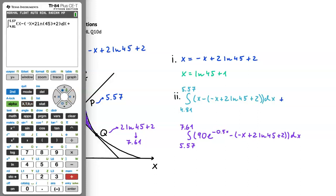To this we'll add the second integral, so we'll once again press Math and 9. Here the lower limit is 5.57, and the upper limit is 7.61. Inside the integral we have 90, and since e here is to a power, I will press 2nd and ln. In this power, or exponent, we have negative 0.5x. Then we'll come out of the power.